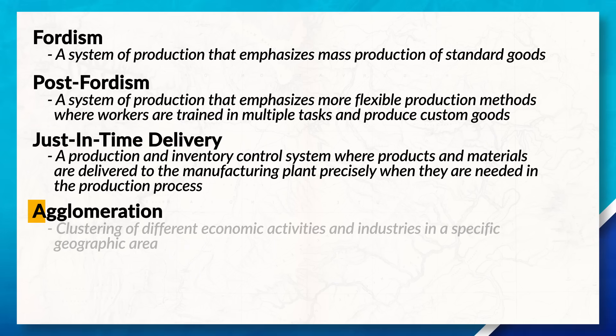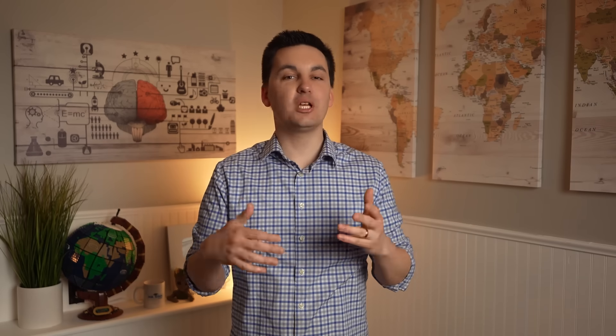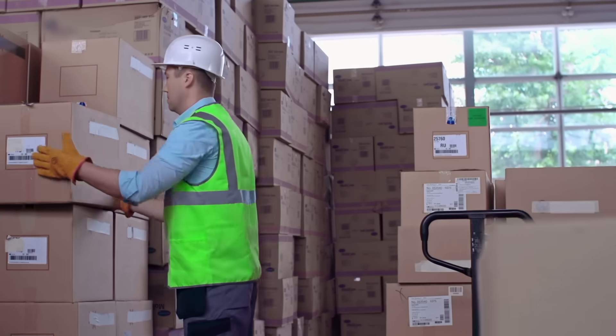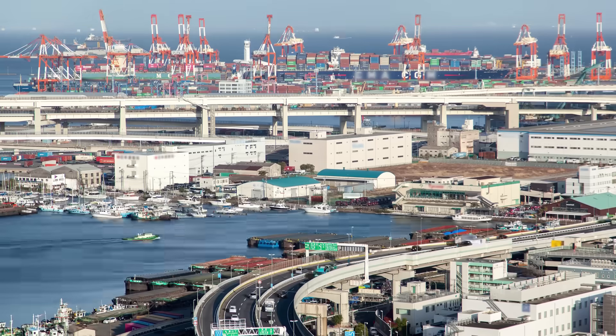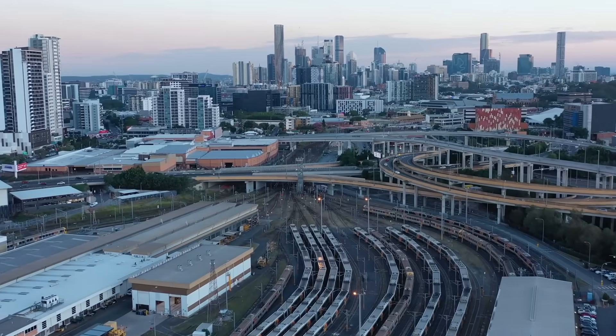Since we're talking about how production is now occurring in multiple stages and locations, we also need to look at the economic benefits of agglomeration and growth poles. Agglomeration is the clustering of different economic activities and industries in a specific geographic area. This happens because businesses want to reduce their overall cost by taking advantage of a larger labor force, benefiting from existing infrastructure, or by utilizing different services and knowledge bases in an area.